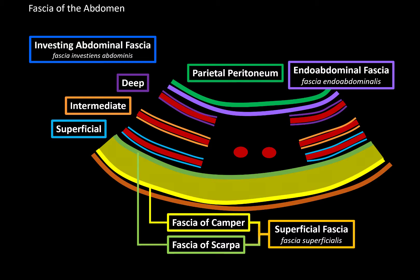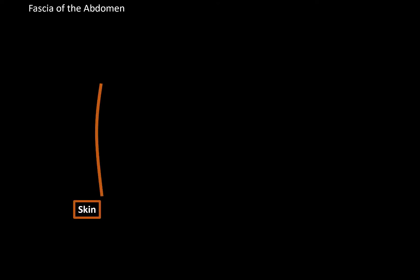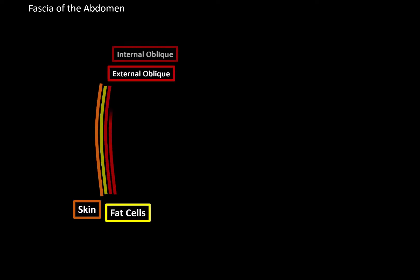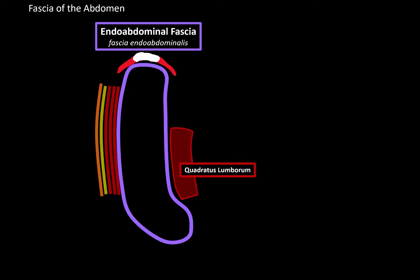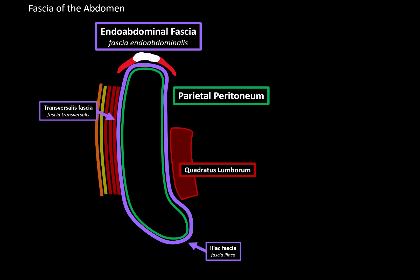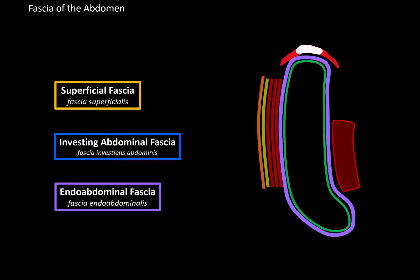The endo-abdominal fascia is actually divided into certain parts depending on its location. So let's look at that by drawing the lateral view of the abdomen. First, we have the skin, then the fat cells, then the external oblique, internal oblique, and the transverse abdominis. Deeper to those muscles, we will find the endo-abdominal fascia. And here to orientate, we will add a perfectly drawn diaphragm and the quadratus lumborum muscle. The endo-abdominal fascia gets different names depending on its location. If we're looking at it from the abdominal part, it's going to get the name transversalis fascia. If the endo-abdominal fascia is in the pelvis, it's called the iliac fascia. The transversalis fascia and the iliac fascia are the most important ones to know when studying the fascia of the abdomen. Just underneath the endo-abdominal fascia is the parietal peritoneum. And those, my friends, are the three fasciae that I wanted to talk about in this video.